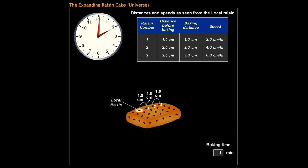This animation will illustrate the raisin cake analogy to our expanding universe. The local raisin represents our local group of galaxies, and other raisins represent more distant galaxies.